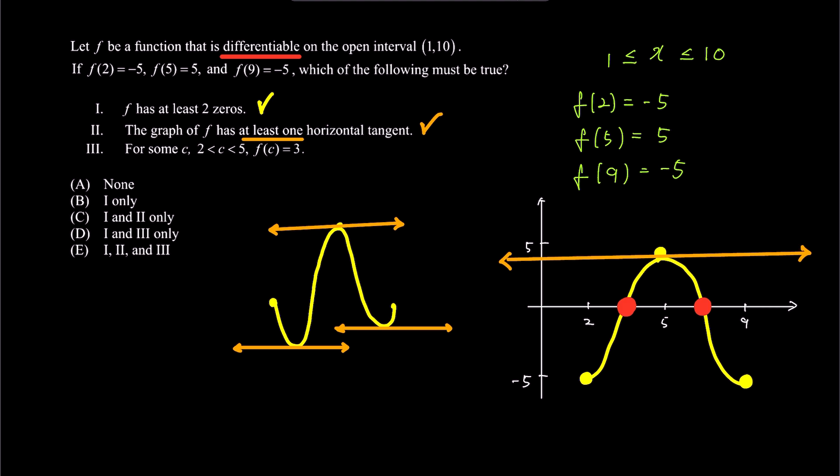Third, for some c between 2 and 5, f of c is 3. This condition questions whether there exists a value of c between 2 and 5, where the graph passes through the height of 3. As shown in the graph, f of x passes through the height of 3 at least once, between 2 and 5. Hence, this statement is also true.